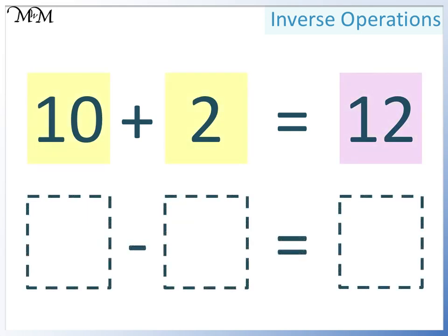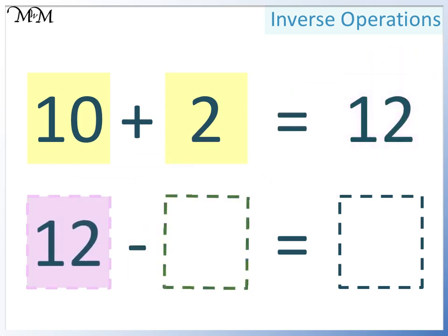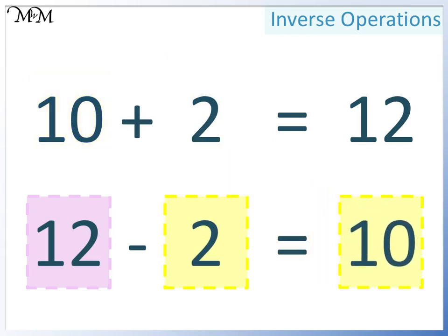Let's look at another way that we could arrange this. We are subtracting, so the largest number must go at the start. This is 12. Either 10 or 2 can go here. This time, we'll choose 2. Finally, we can move the 10. 12 take away 2 equals 10.